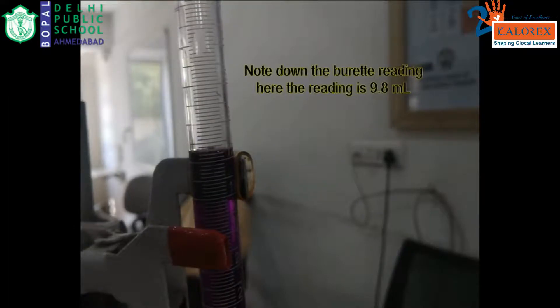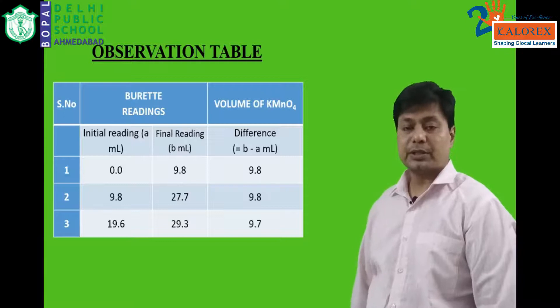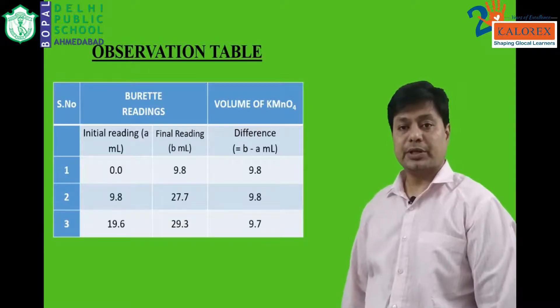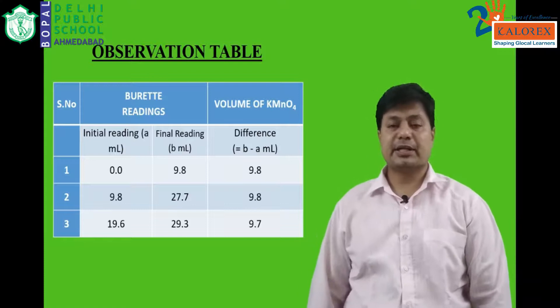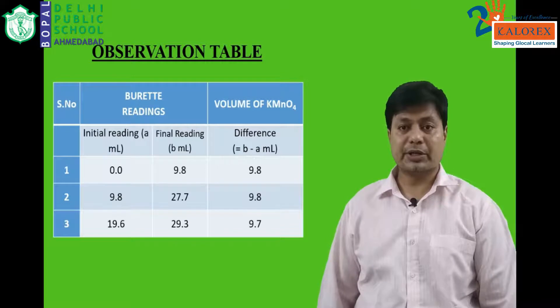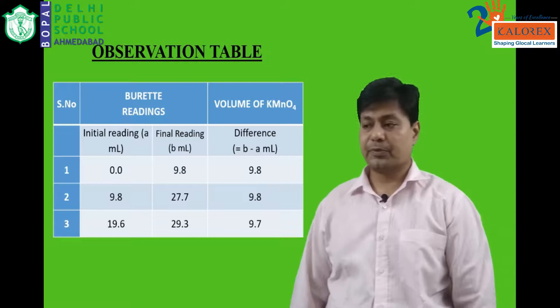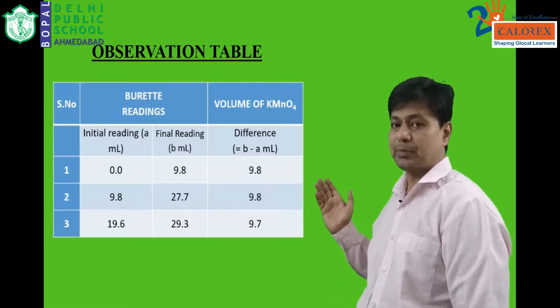Note down the burette reading. Here in this practical, the reading is 9.8 ml. Let us talk about the observation table. Here you can see the observation table. We are going to take three readings: the burette readings, initial reading and the final reading. For the practical what we have seen, the concordant reading came out to be 9.8 ml. Similarly, we have to prepare the table. This is an example for you.